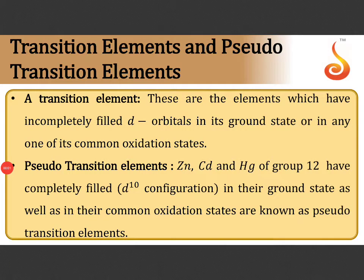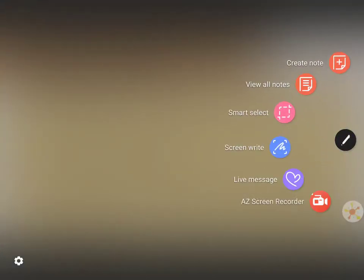Transition elements are elements which have incompletely filled d orbitals in the ground state or in any one of the common oxidation states. In the ground states there are lots of examples: d1 to d10, d1 to d8. There are many examples with respect to common oxidation states. I would like to give you some examples here.